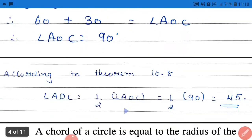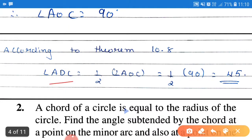So, that will be angle ADC is equal to half of angle AOC. Angle AOC humne 90 find kiya hai. So, the answer is 90 divided by 2. That will be equal to 45. Clear?